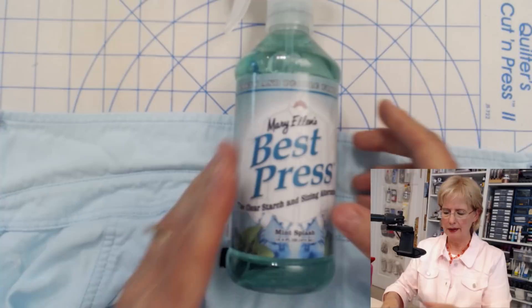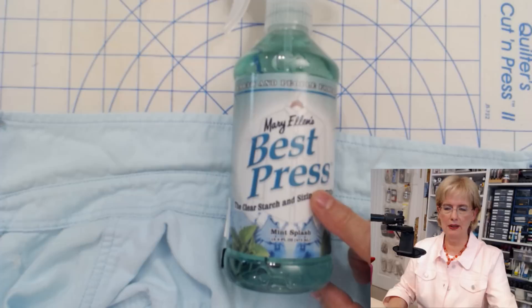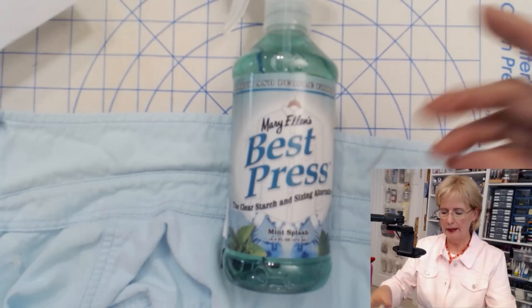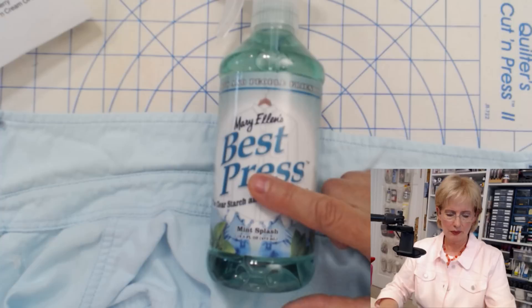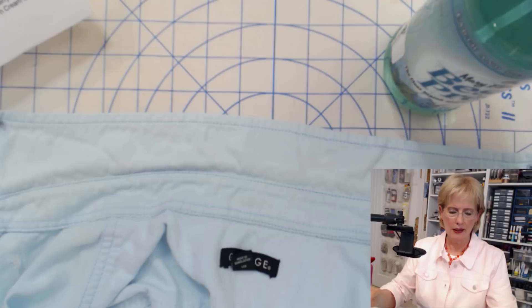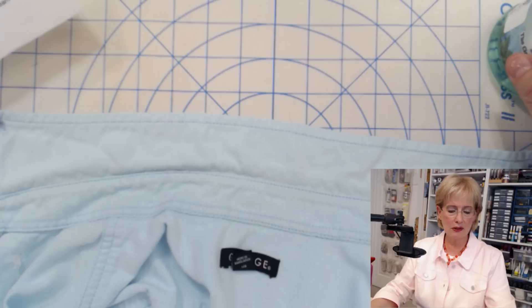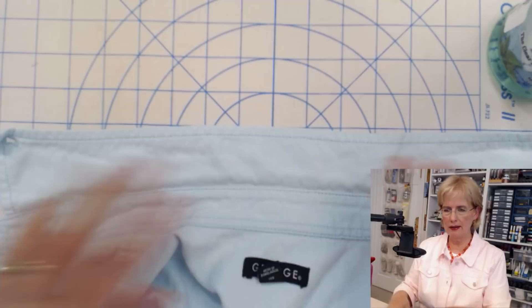This particular one is Mint Splash. Now this particular product comes in lots of different scents and I'm going to read off the different scents to you. So if you like scented products, this is not overly scented. This is a nice light scent. Mint Splash, which is this one, Linen Fresh, Frankincense and Myrrh, Citrus Grove, Cherry Blossom, Caribbean Beach, Tea Rose Garden, Lavender Fields, Peaches and Cream, and there's also a scent-free version. I've used several of those but I thought I'll try this one.